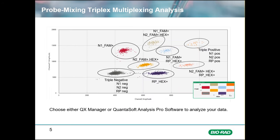The third target — human RPP30 positives — is a result of adding 100% HEX probe. The analysis is simple when using QX Manager or QuantaSoft Analysis Pro. After opening and selecting probe mixing triplex mode in the assay information box, you will add the name of the three targets and the dye combination. Next, the software will provide a guide that will allow for easy clustering — just follow the guide to label each cluster.